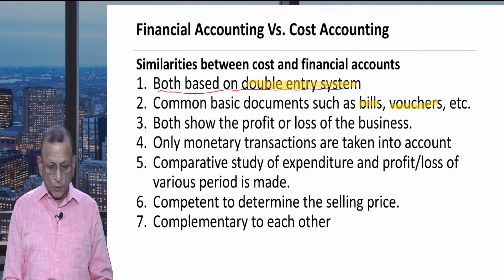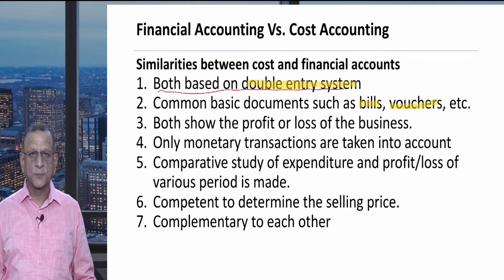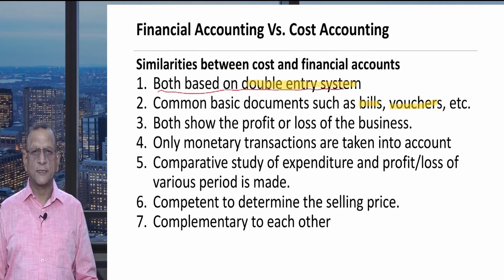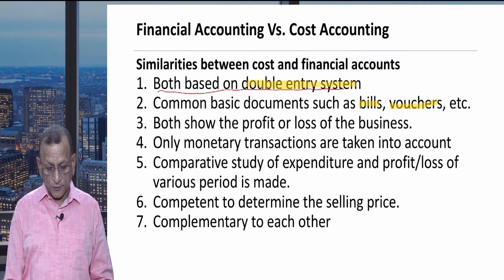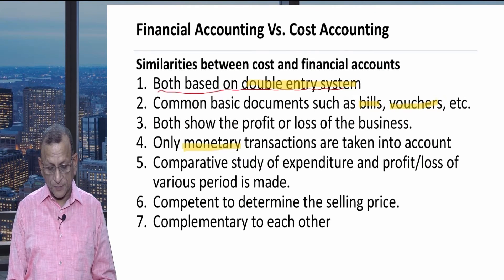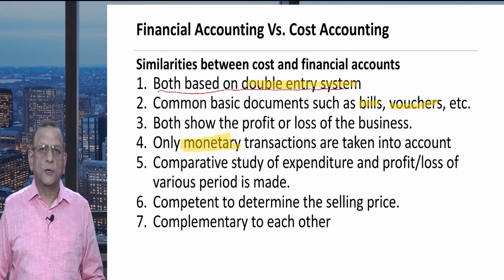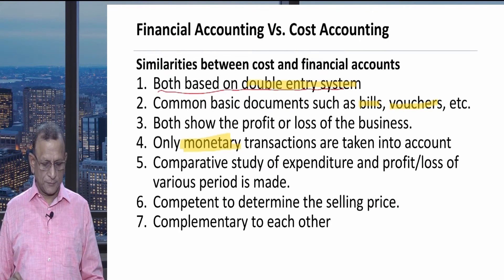The fourth point is that only monetary transactions are taken into account. If something is not measurable in terms of money — money measurement — then that thing cannot be recorded in the accounts, whether financial or cost.